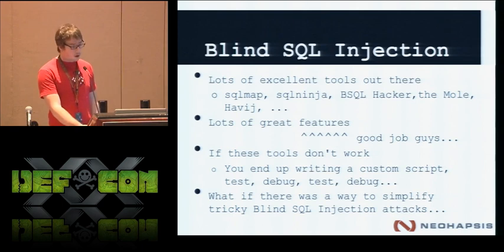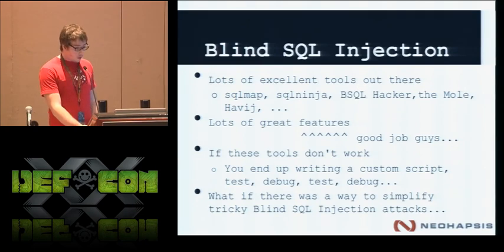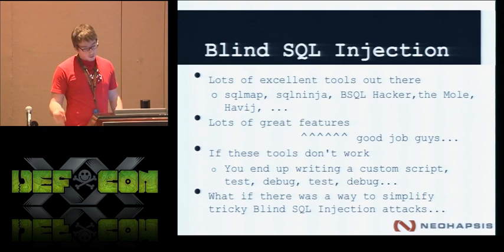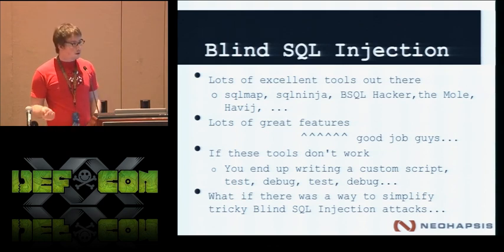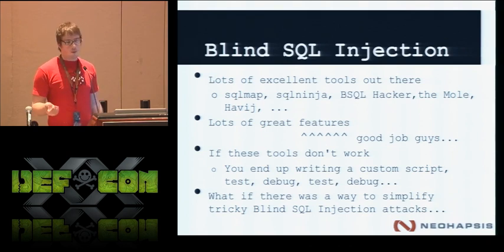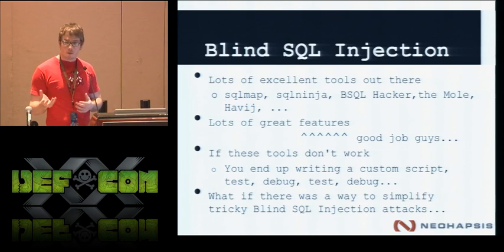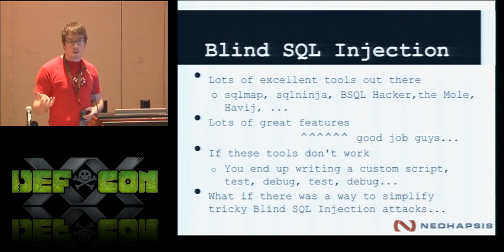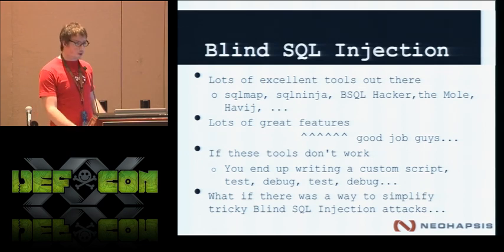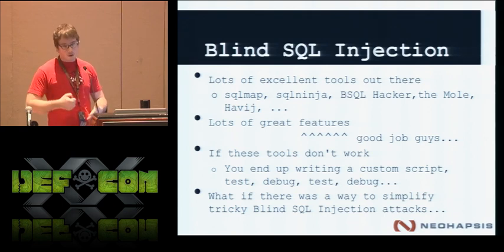There are awesome tools out there — SQL map, SQL Ninja, the Mole — they all have great features. But when these tools don't work, what do you end up doing? You come up with your own query. Maybe there's a weird nuance where requests have to be double URL-encoded, or you can't use ASCII, or some command that should work on a database server just doesn't. Maybe the DBA has made a specific policy blocking certain commands. So you fire up a Ruby or Python script and write your own logic, and it's a pain — test and debug, test and debug.